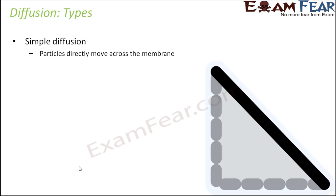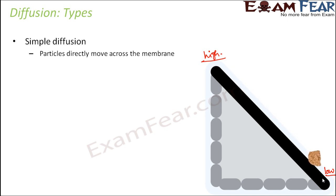Let us take an example of a region which has a slope. The top of the slope denotes the region of high concentration and the bottom denotes the region of low concentration. Simple diffusion is that type of diffusion where particles directly move across the concentration gradient. This particle independently moves from region of high to region of low concentration — it did not need anyone's help or any other particle's support. It happens by itself across a concentration gradient. That is simple diffusion.